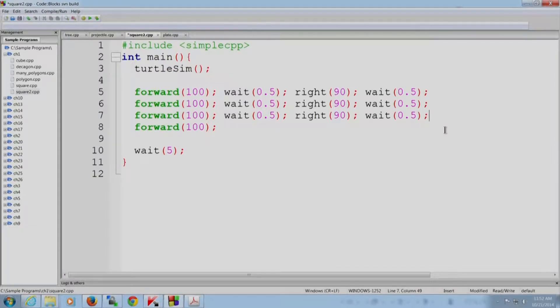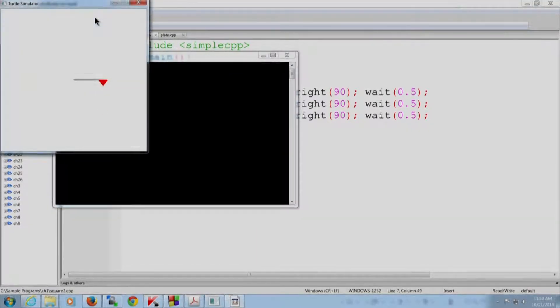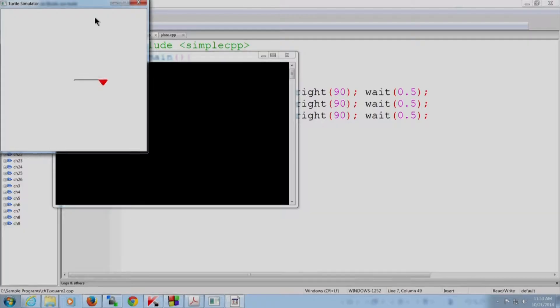So as you can see, I have taken the program that I showed to you and I have loaded it into the code blocks IDE along with the wait statements that as I mentioned. So now I am going to compile and run it. As you can see, the turtle went forward and then turned and did this and indeed drew a square on the screen.